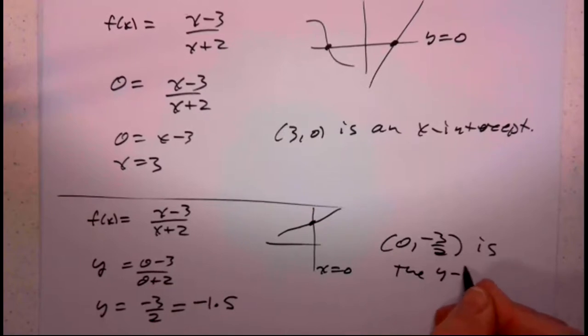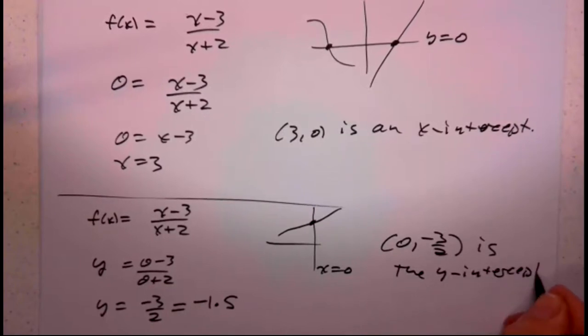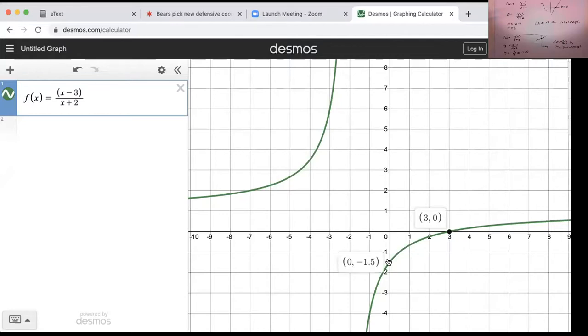Now a function cannot have more than one y-intercept because that would violate the vertical line test. But a function can have more than one x-intercept. That's possible. Let's go back and look at Desmos and see if we identify that y-intercept. y-intercept is here. 0, negative 1.5. And that looks good.